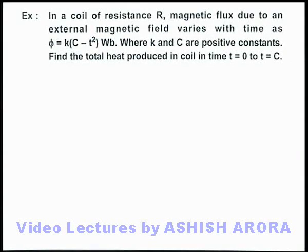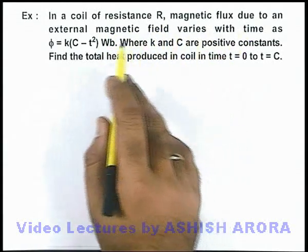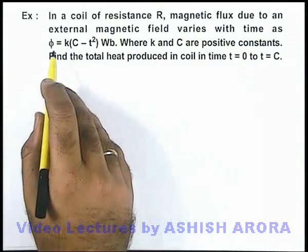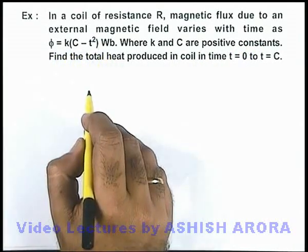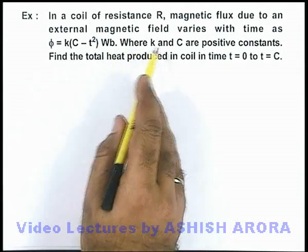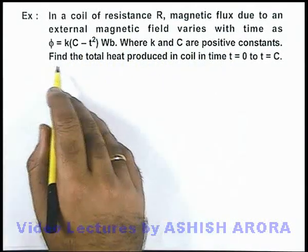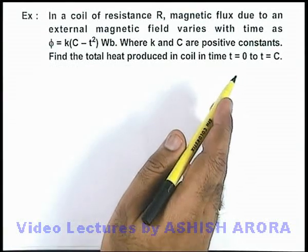In this example, we are given that in a coil of resistance R, magnetic flux due to an external magnetic field varies with time as φ = k(C - t²) Weber, where k and C are positive constants. We are required to find the total heat produced in the coil in time from zero to C.